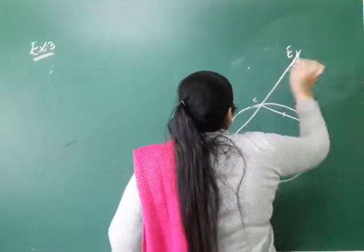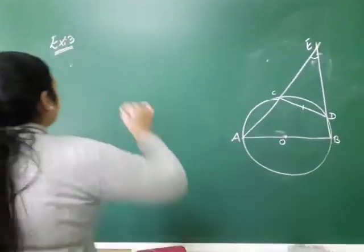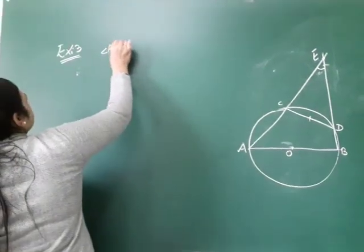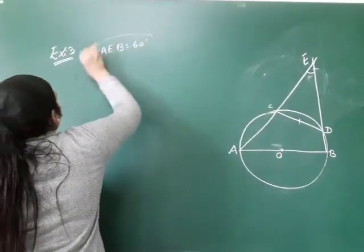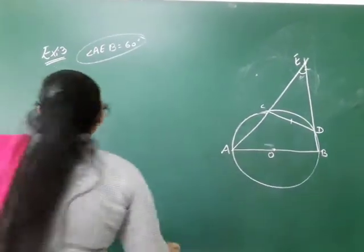You have to show that angle AEB is 60 degrees. So what do we need to show? Angle AEB is 60 degrees.